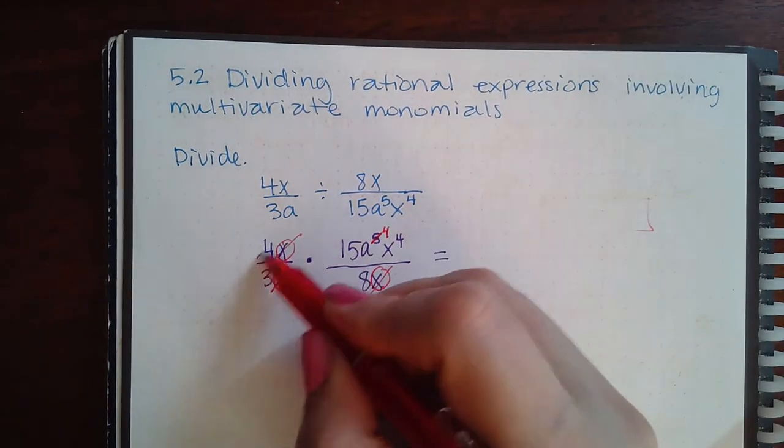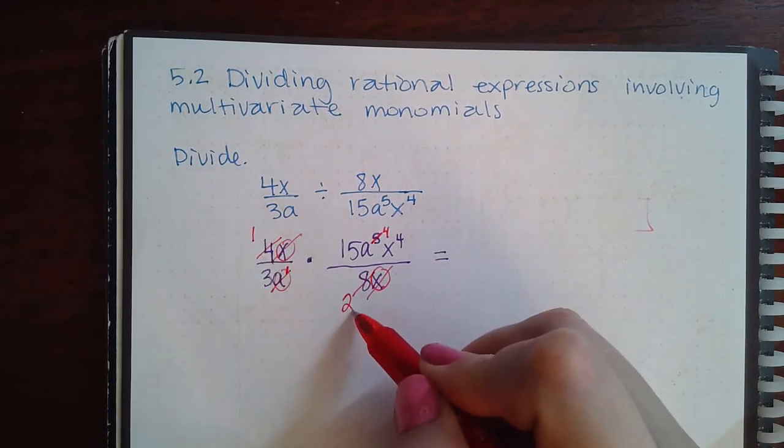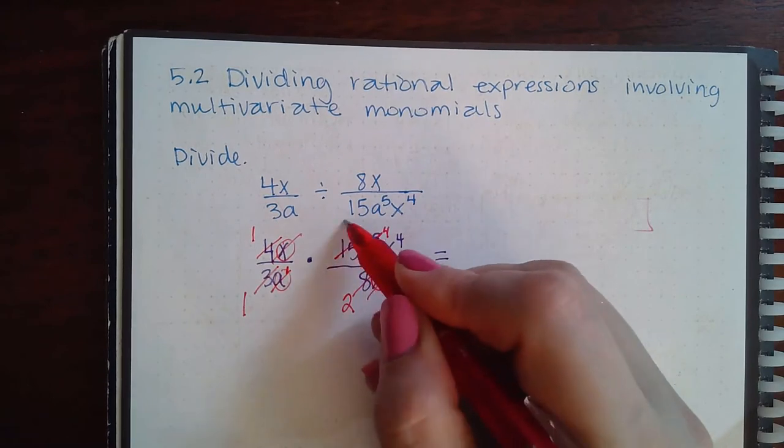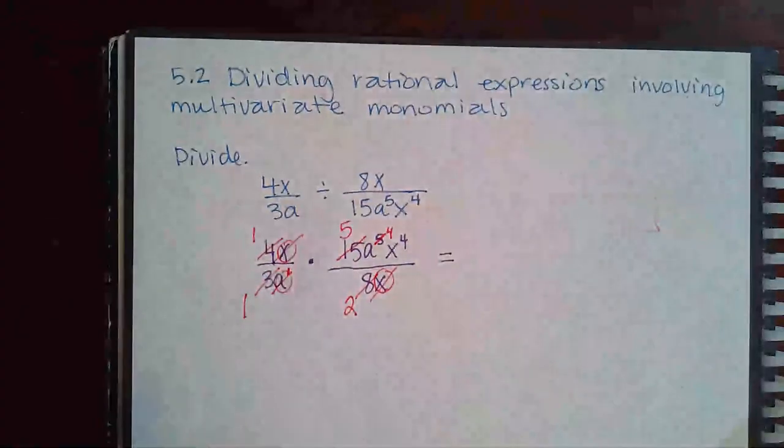And then here I can reduce by four—I get one. I can reduce by four—I get two. Here I can reduce by three—I get one. If I reduce by three, I get five.